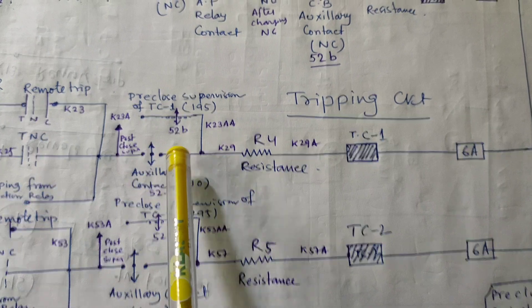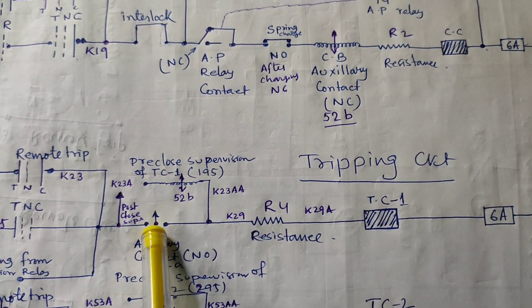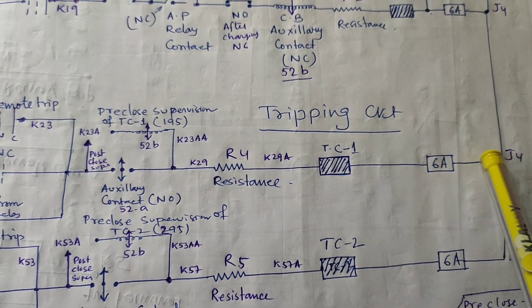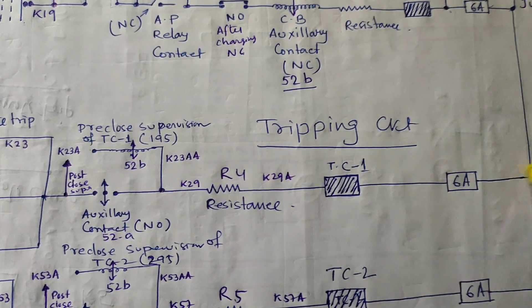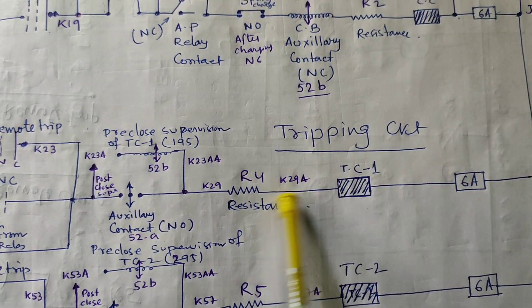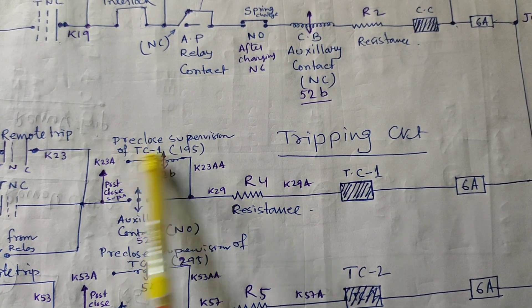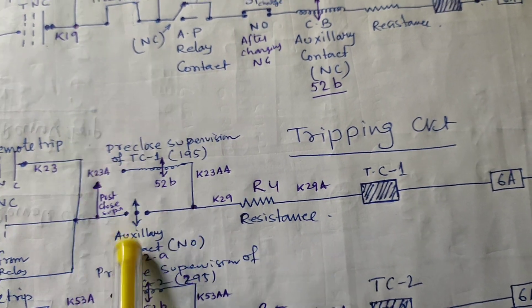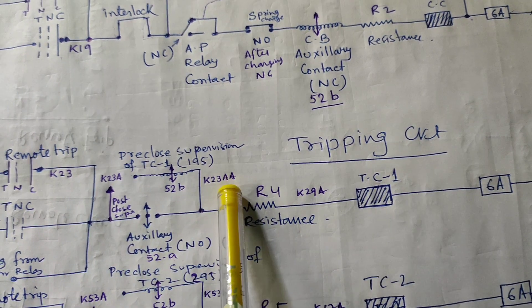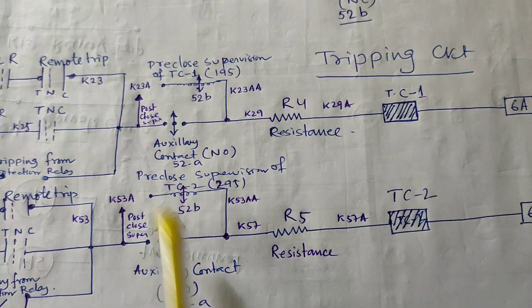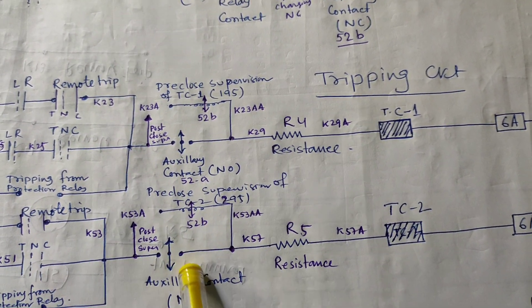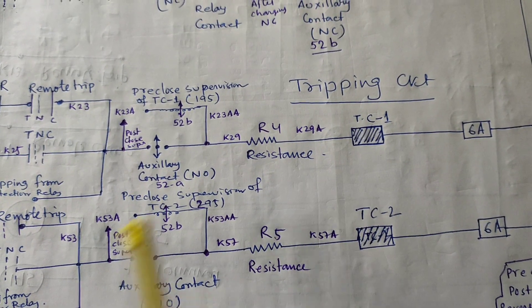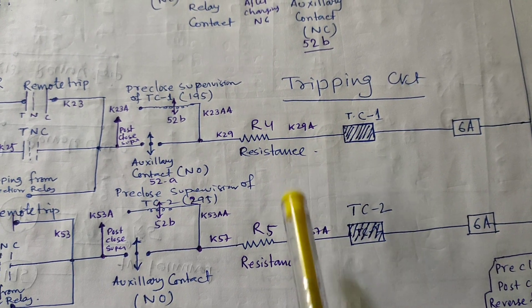After the breaker is in on condition, 52 air B will be NO and 52 air A will be NC. So we are again supervising trip coil 1 and trip coil 2 path by taking the negative pulse from this path — not from the previous path. This is the post-close supervision. Breaker is on in condition; we are getting the negative pulse from here and providing the positive pulse to the 195 or 295 relay coil for energization. If the coil is energized, we are assured that the path of trip coil 1 and 2 is fine with no problem in the circuitry.